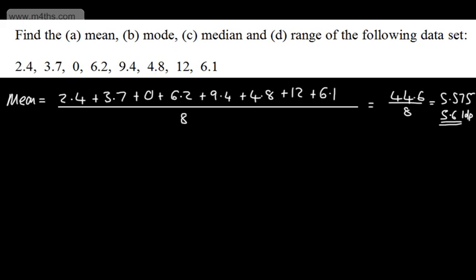Let's now look at finding the mode of this data set. If we look here, 2.4, 3.7, 0, 6.2, 9.4, 4.8, 12 and 6.1, we don't have a mode. A common error here is to put the mode is 0. It's not. We can see 0 is in here. What we would say is that there's no mode. So all of these now have the same number of values. So don't fall into a trap of saying the mode is 0.